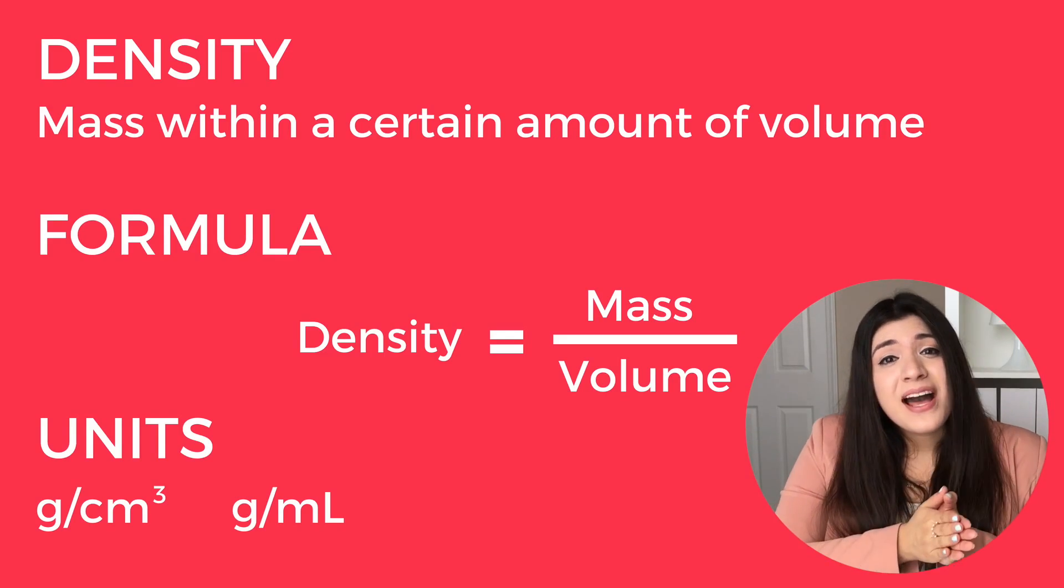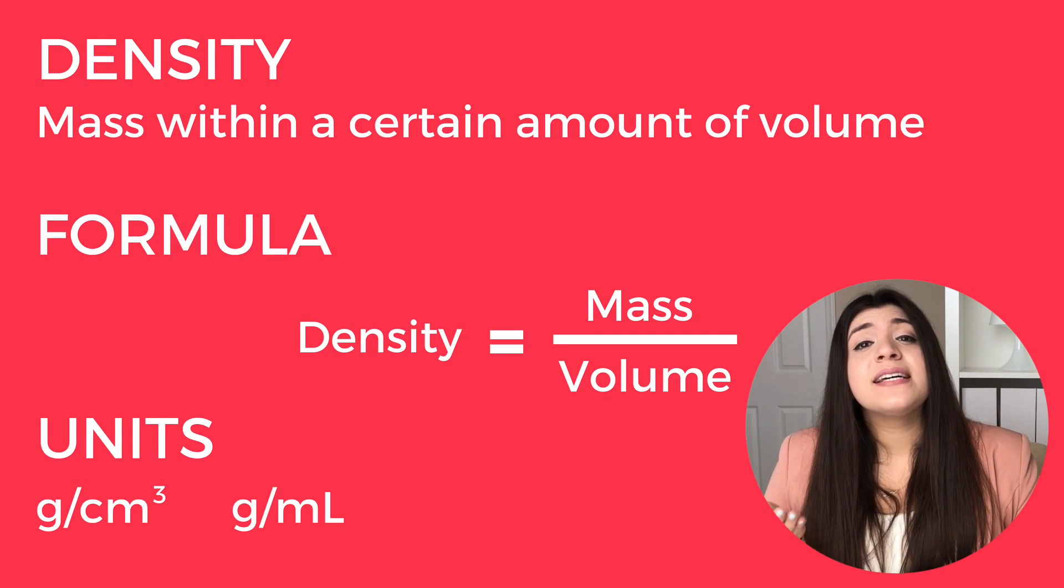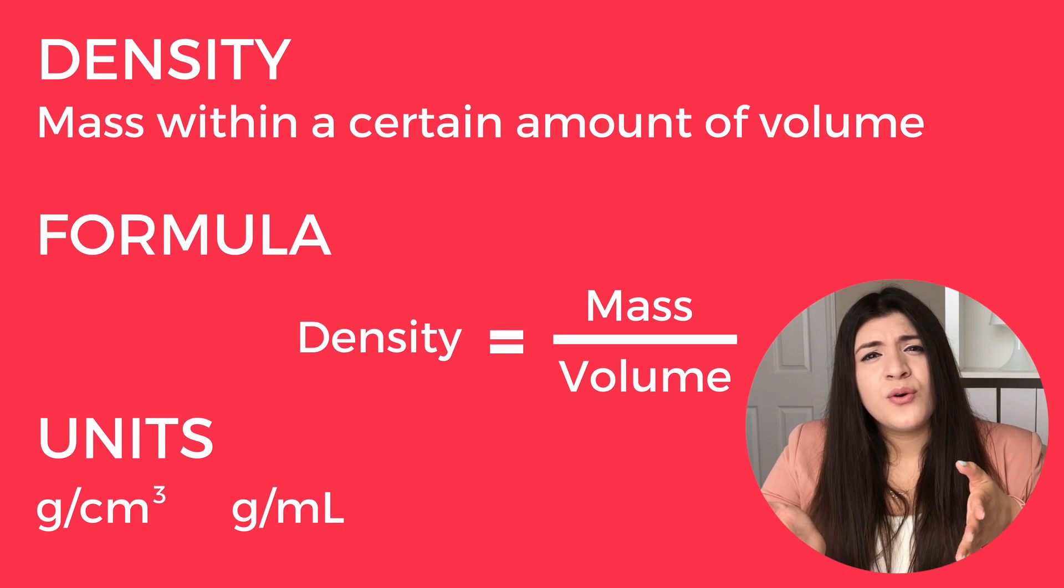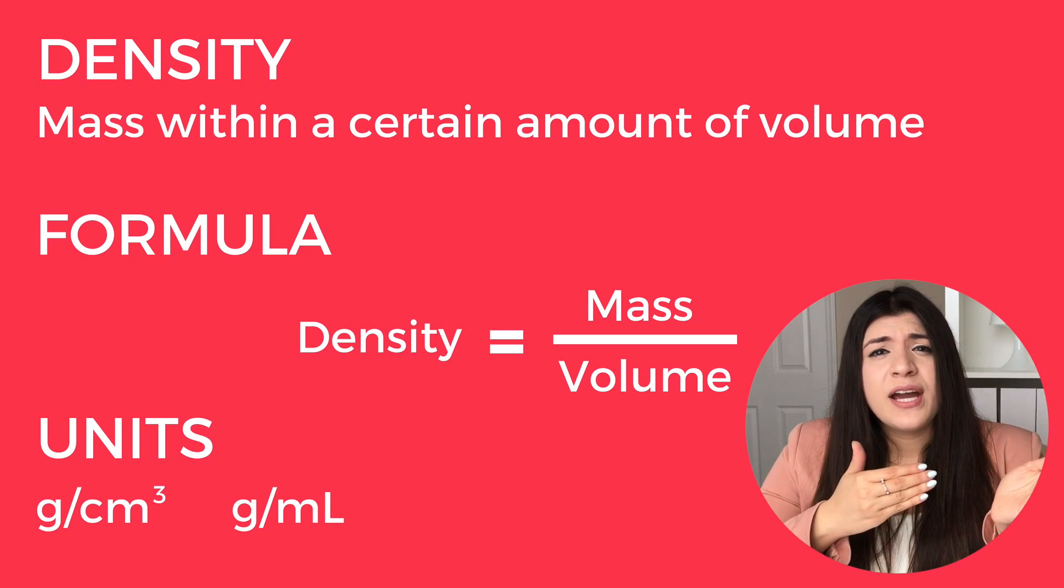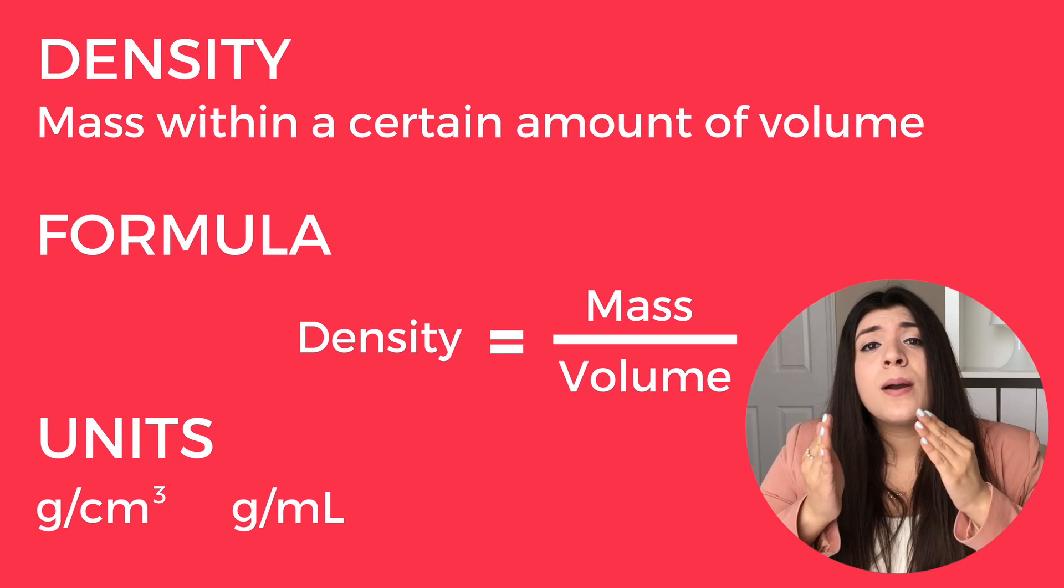We're talking about density. Density is mass within a certain amount of volume. Our formula is mass divided by volume. The proper units that you'll notice for density are grams per centimeter cubed or grams per milliliter.